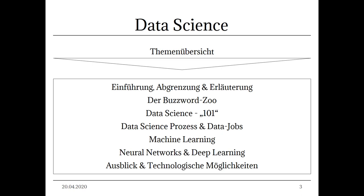Anschließend besprechen wir das Data Science 101: Was braucht ein Data Scientist an Fähigkeiten? Was ist ein Data Scientist, was tut er, und was für technische Skills sind nötig? Das führt uns in den Data Science Prozess: Wie führe ich professionell ein Data Science Projekt durch? Was für Jobarten und Anstellungstitel gibt es? Wir widmen uns dem Ganzen Top-Down und steigen anschließend tief in Machine Learning, neuronale Netzwerke und Deep Learning ein.